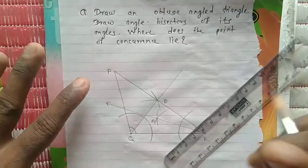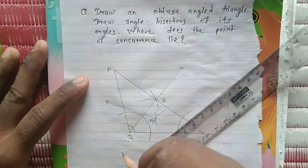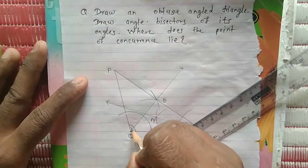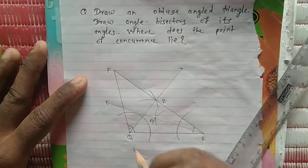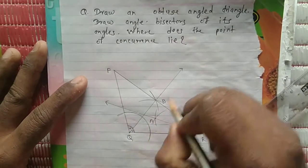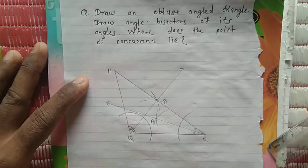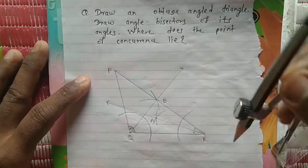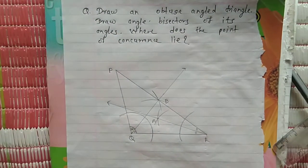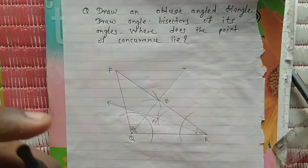So here we get the angle bisector of angle Q. QB is the angle bisector of angle Q. Now we have to draw the angle bisector of angle P.